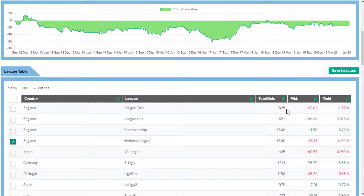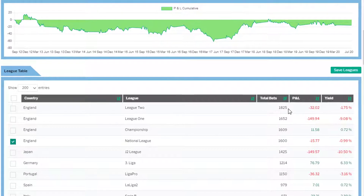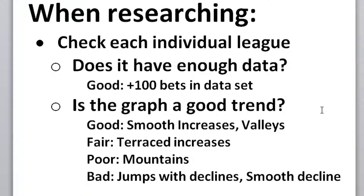When I'm researching, I usually rank my leagues by how many bets they have, so I start with the leagues with the most bets. The more data I have, the more sure I can be that this is a real pattern or a real trend. I'm also looking at the graphs — is the graph showing a good trend?